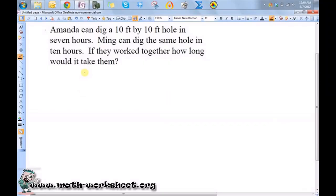To solve this work problem, I'm going to set up the following equation. T divided by the total amount of time it takes the first person to do this job, so T divided by 7, plus T divided by the time for the second person, so 10. I'm going to add that sum to 1.